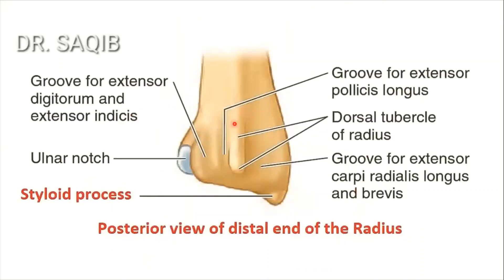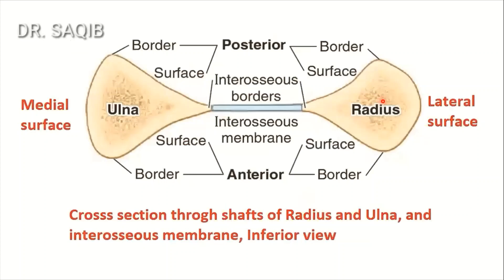Here you can see the dorsal tubercle of the radius — the tubercle of Lister — and on both sides are grooves for various tendons, which will be explained in later discussion. Here you can see the radius and ulna with their interosseous borders. The radius is triangular in cross section, and this is its apex.